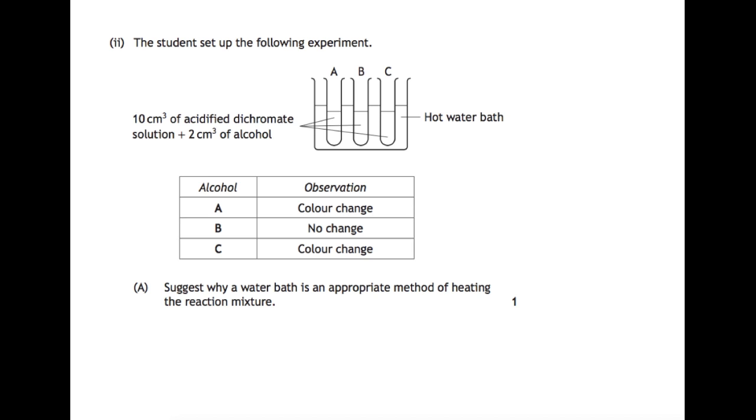This question involves a student setting up an experiment which you may be familiar with and may have carried out yourself. The student is trying to determine what sort of alcohols they have present, be it primary, secondary or tertiary. They have the alcohols and they are reacting them with acidified dichromate solution.